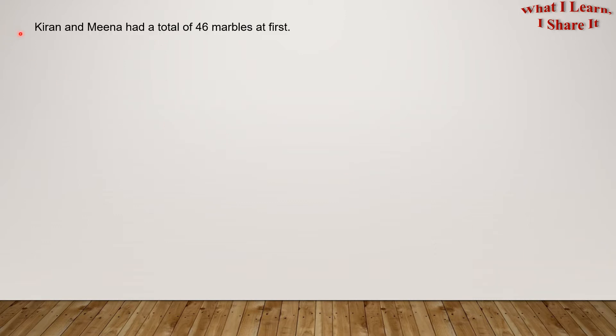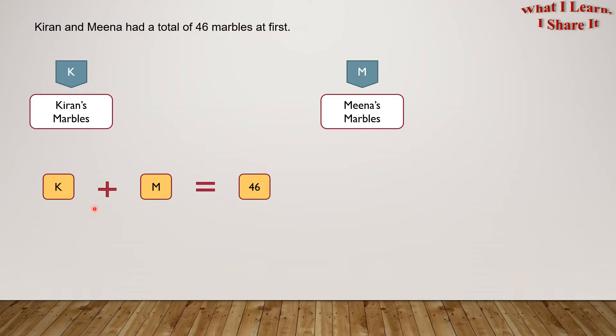Karen and Nina had a total of 46 marbles at first. Let's represent Karen's marbles by K and Nina's marbles by M. This means K plus M equals 46. Let's write this equation with the first sentence.